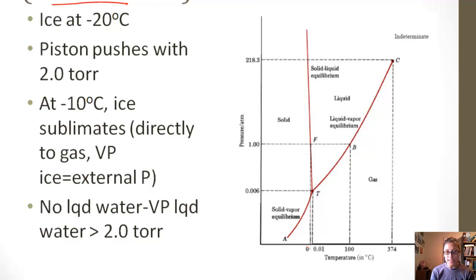At about negative 10 Celsius—and remember this isn't to scale, so I'm going to guess negative 10 is somewhere around here—sublimation will occur. Here's our solid-vapor equilibrium, this is our sublimation. Sublimation is where a solid goes directly to a gas. This is where the vapor pressure of the ice is equal to the external pressure.